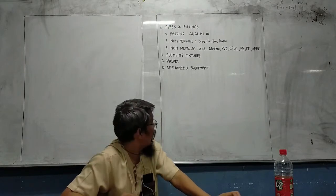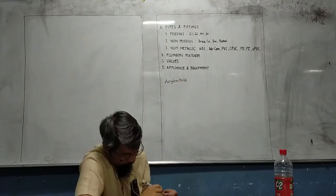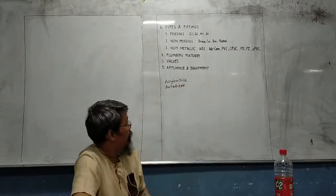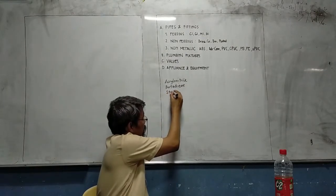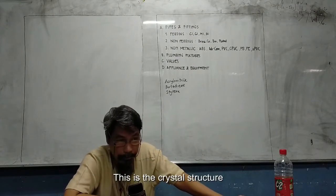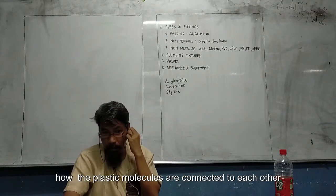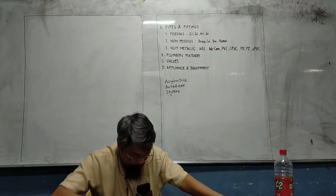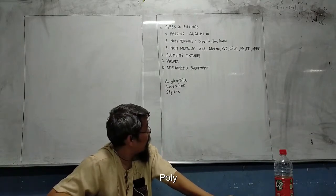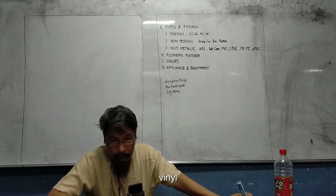One type is ABS — acrylonitrile butadiene styrene. PVC stands for polyvinyl chloride — poly, vinyl, chloride — those are very common words that do not need to be written down.